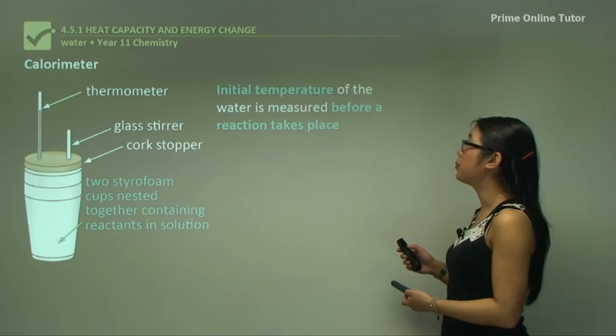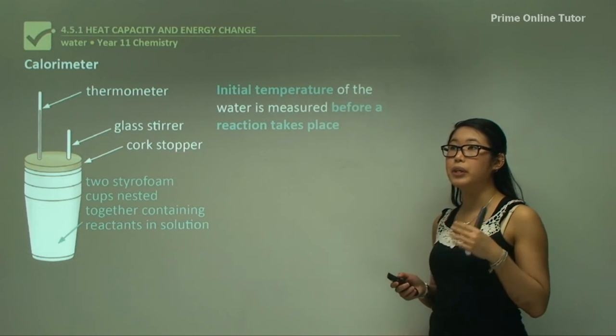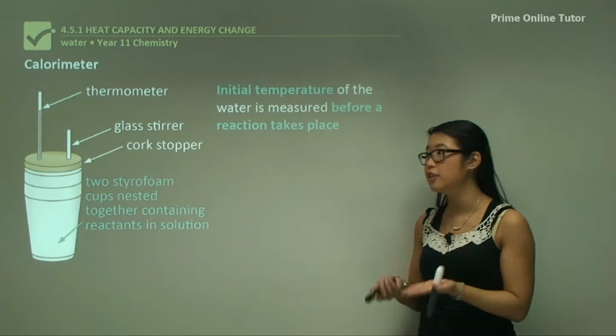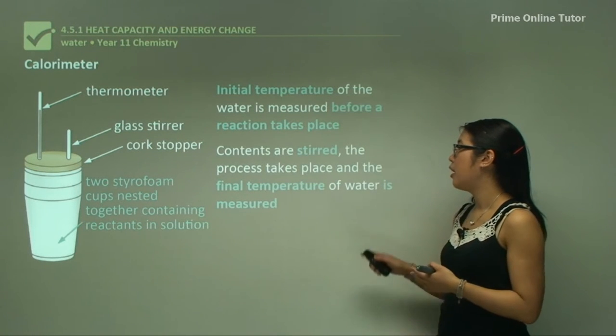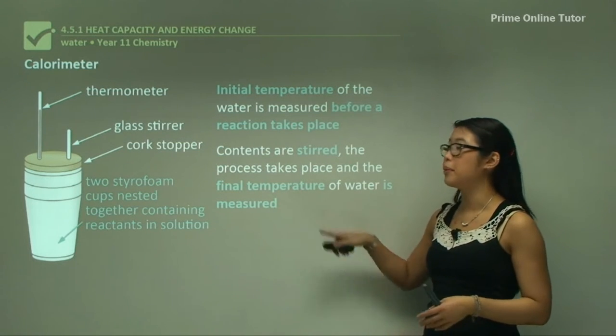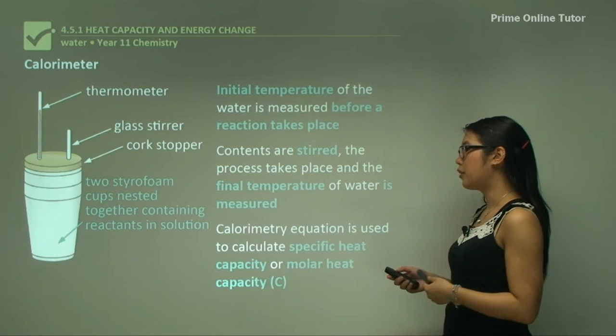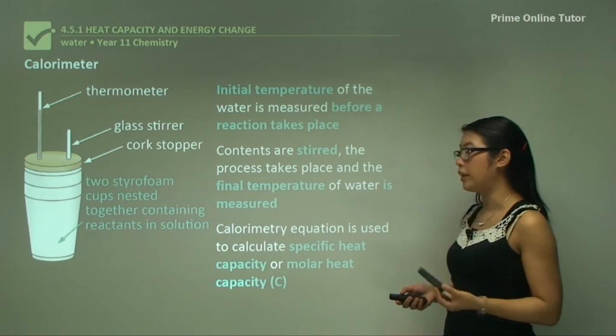The initial temperature of the water is measured before the reaction takes place, so we have the starting point. Remember we said we can't measure enthalpy with just one point, we need to have the change. The contents are stirred and the process takes place, then we measure the final temperature and get the difference. A calorimetry equation is used to calculate the specific heat capacity or molar heat capacity.